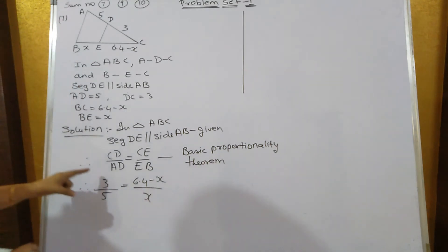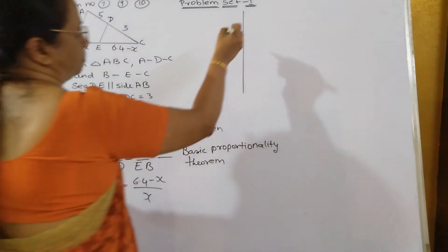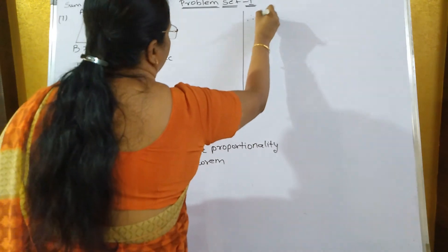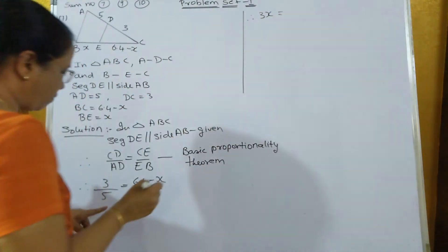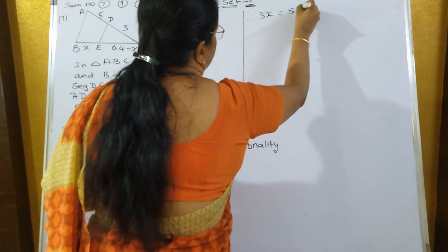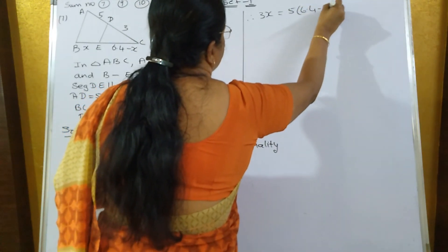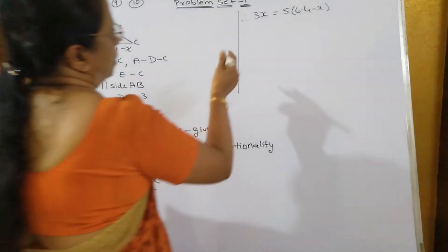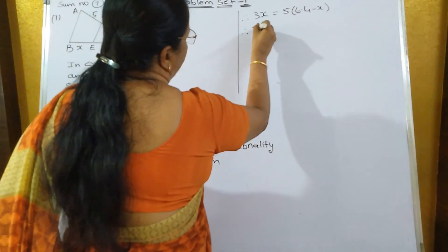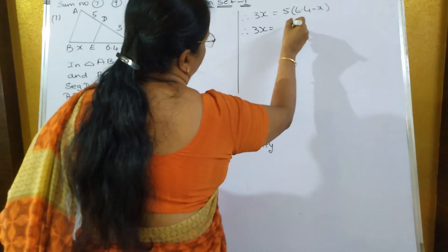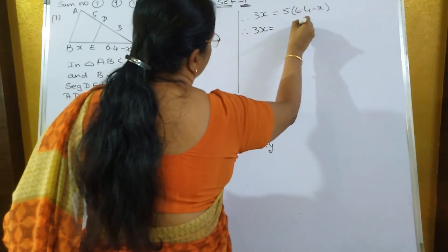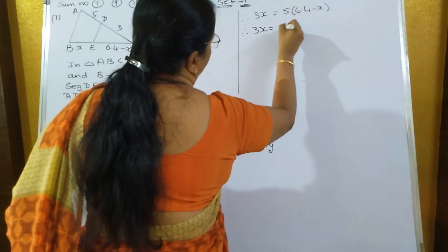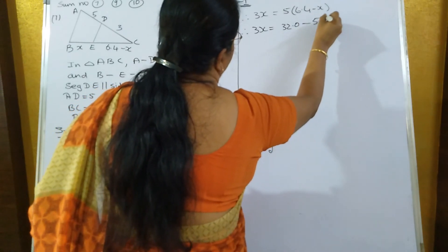Cross multiply 3 into X. 3X is equal to 5 into 6.4 minus X. Therefore, 3X is equal to 5 into 6.4 is what? 32.0 minus 5X.